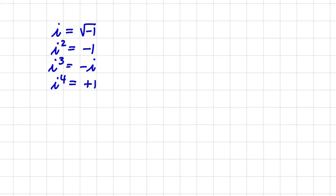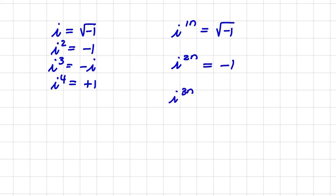A rule we can use is: if I raise i to the power of 1n, that equals the square root of negative 1. If I raise i to the power of 2n, that equals negative 1. i to the power of 3n equals negative i. And i to the power of 4n equals positive 1.